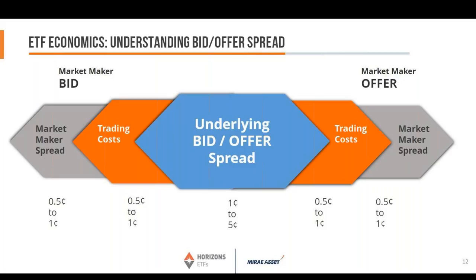These are important things to keep in mind. You have to weigh how much you have to invest, what the bid-ask spread is, and how that measures up versus the management fee. You may be paying much less for the $50 unit of the S&P 500 ETF but it could have a higher management fee, versus the $10 unit which has a smaller management fee but a higher per-unit trading cost. These are the things to think about when executing your trades.